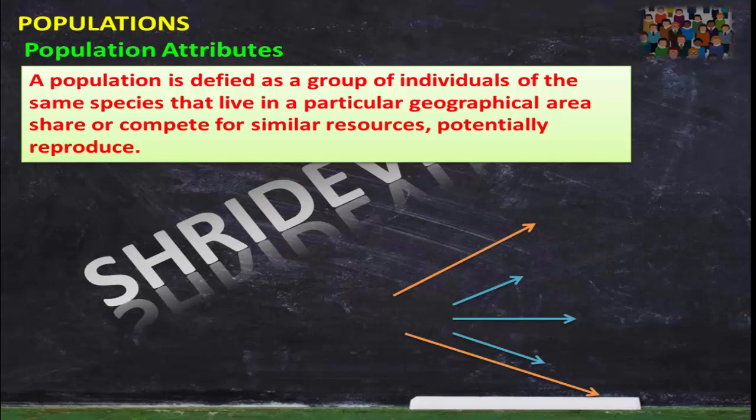They must have the ability to undergo reproduction. This character qualifies a group of individuals to be called a population. For example, the tigers in a national park — say 20 tigers in one national park — that represents the tiger population. All individuals are of the same species, they live in one geographical area, they share or compete for the same resources, and they have the ability to undergo reproduction. Such a group of individuals is considered a population.